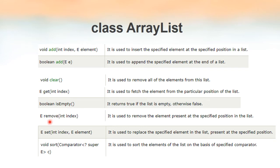Similar to add, we have remove(int index). If we want to remove an element at a given index we use this method. Its return type is E — the element that is removed will be returned. We specify the index location from which to remove, and that element is returned. The return type is E because we can create ArrayList of any type — String, Integer, floating point, or objects of a class.